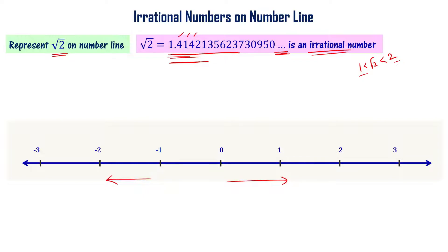The trick is: the distance from 0 to 1 is one unit. Now draw a perpendicular line from point 1 that is also of length one unit. We label the points: A at the origin, B at 1 on the number line, and C at the top of the perpendicular. The length of AC is going to be √2.